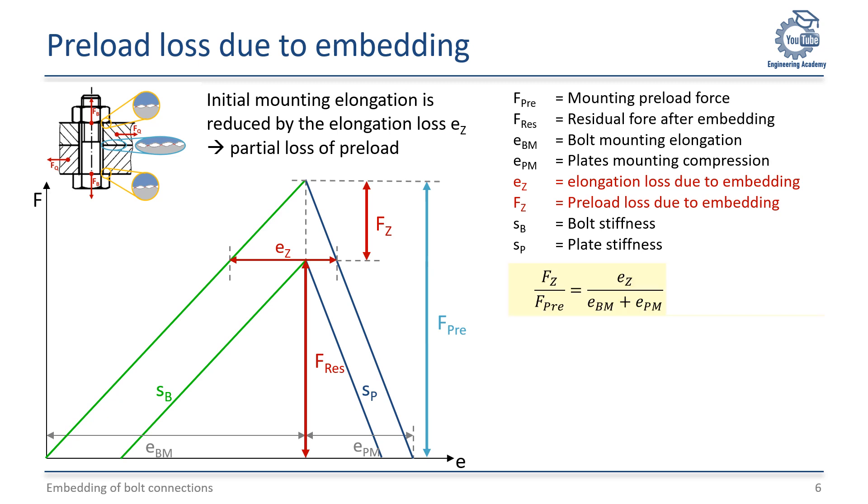FZ is proportional to the assembly preload force FPRE, as the embedding amount EZ is proportional to the sum of the initial elongations EBM and EPM of the bolt and the plates. The initial elongations can also be expressed through the resiliencies delta B and delta P. So, the preload loss FZ is the embedding amount EZ divided by the sum of the resiliencies of the bolt and plates. FPRE cancels out of the equation.